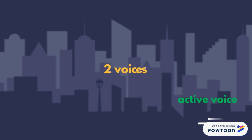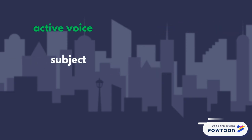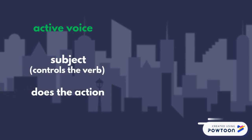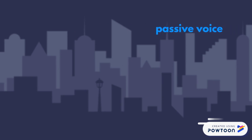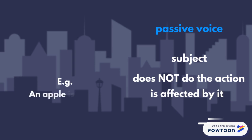There are two voices: the active voice and the passive voice. With the active voice, the subject — the element in the sentence that controls the verb — does the action expressed by the verb. For instance, the boy is eating an apple. With the passive voice, the subject does not do the action but is affected by it. For example, an apple is being eaten by the boy.